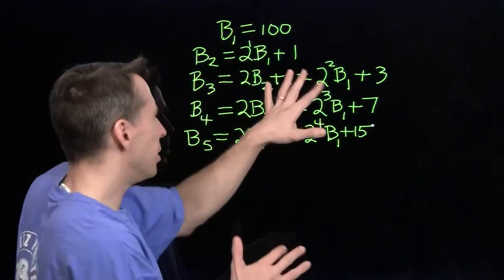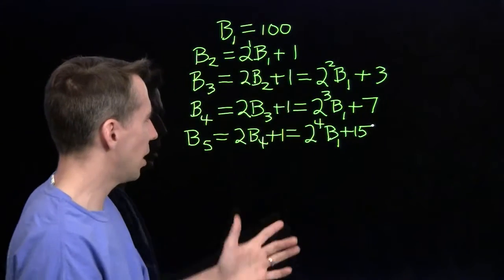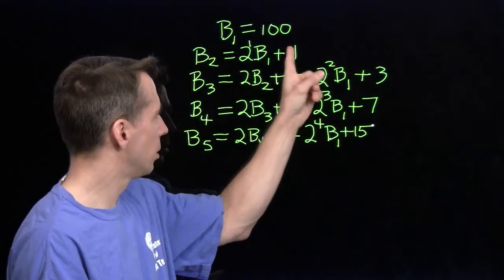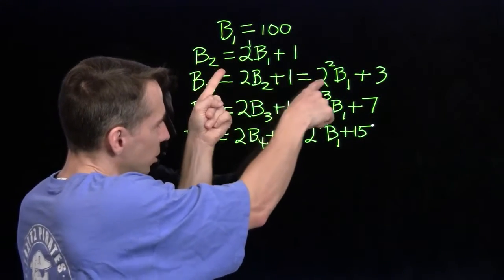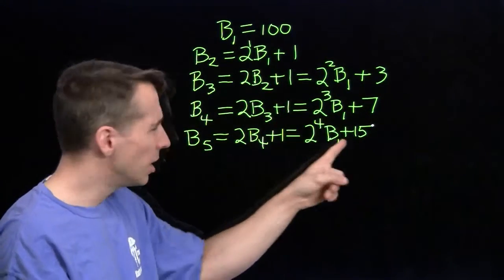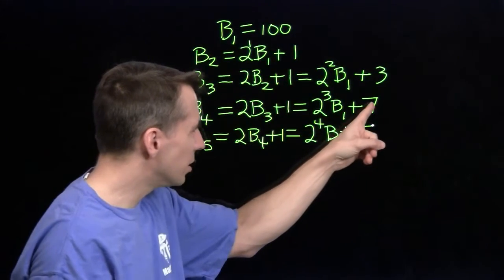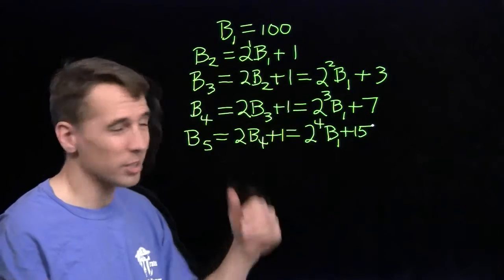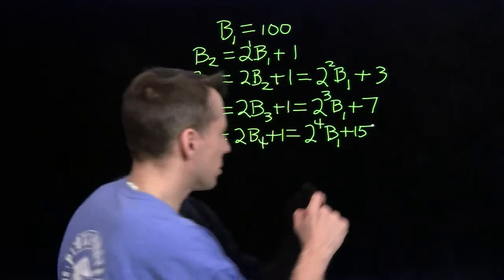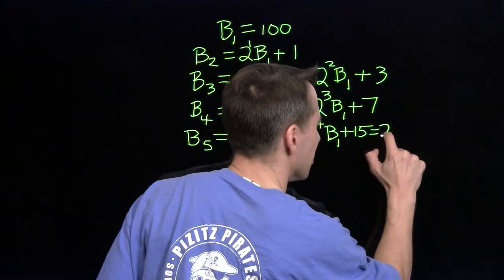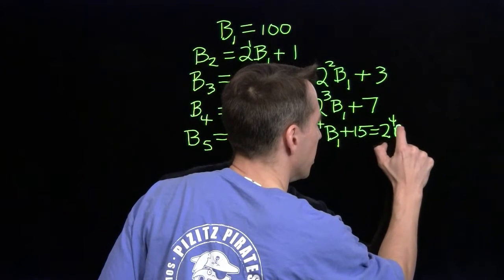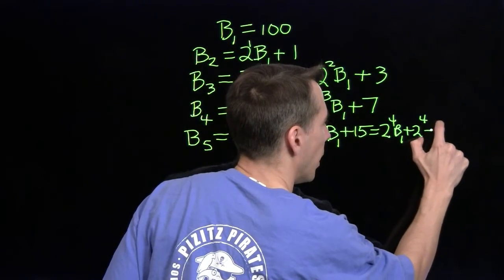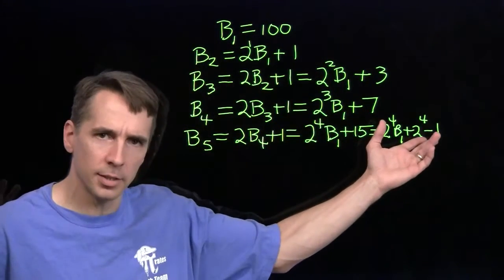Do I see a pattern in these numbers? There's two, four, eight, 16 — these numbers are one less than those powers of two. Seven is one less than eight, three is one less than four, one is one less than two, 15 is one less than 16. So let's think of b-five as two-to-the-fourth times b-one plus two-to-the-fourth minus one, where 15 is one less than 16.